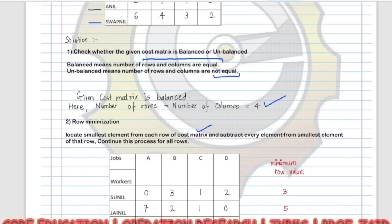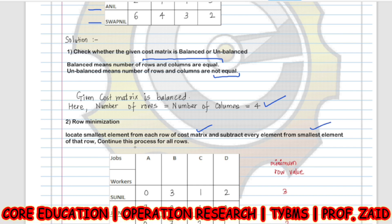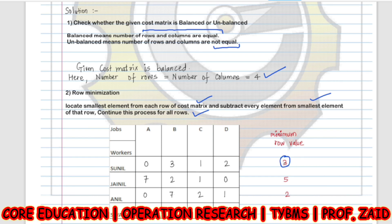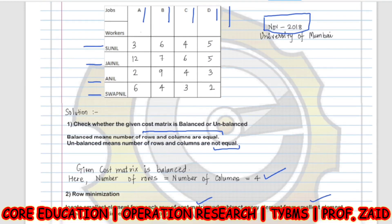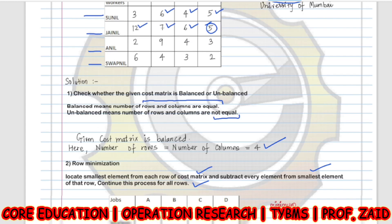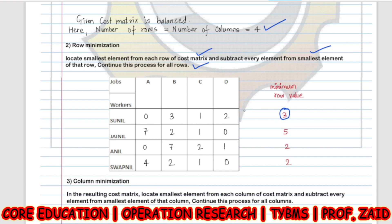The second step is row minimization. Locate the smallest element from each row of the cost matrix and subtract every element from the smallest element of that row; continue this process for all rows. In the first row (Sunil), the minimum value is 3, so we subtract: 3−3=0, 6−3=3, 4−3=1, 5−3=2. For the second row, the minimum entry is 5: 12−5=7, 7−5=2, 6−5=1, 5−5=0. We continue this process for all rows.